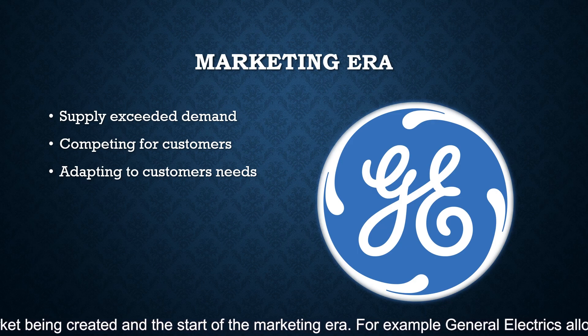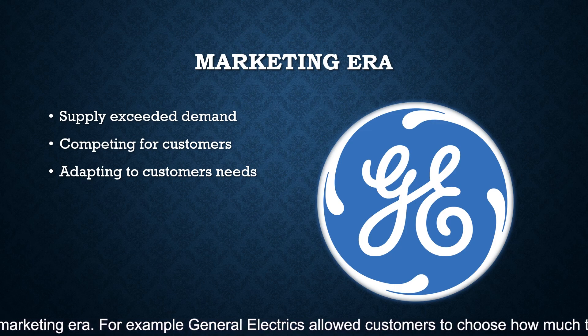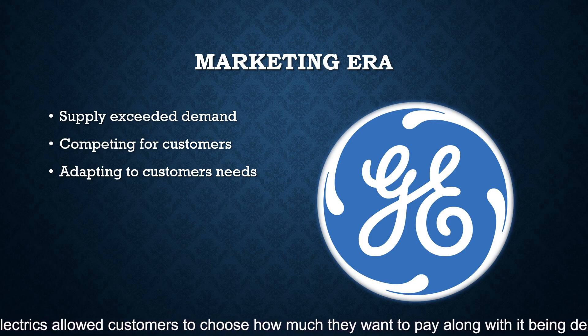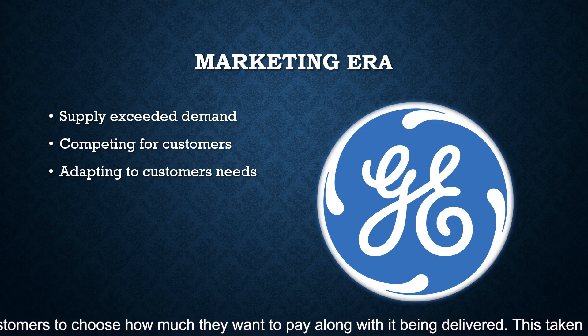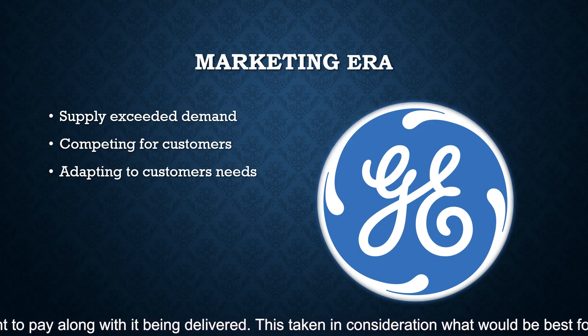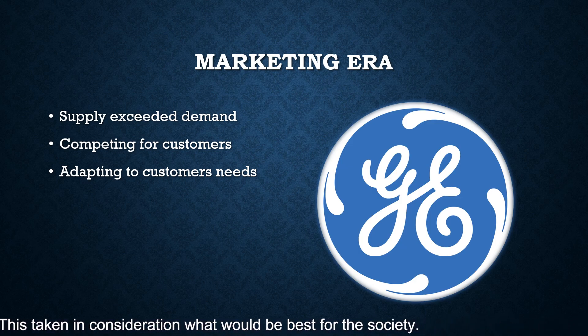For example, General Electric allowed customers to choose how much they want to pay, along with having it delivered. This took into consideration what would be best for the consumer.